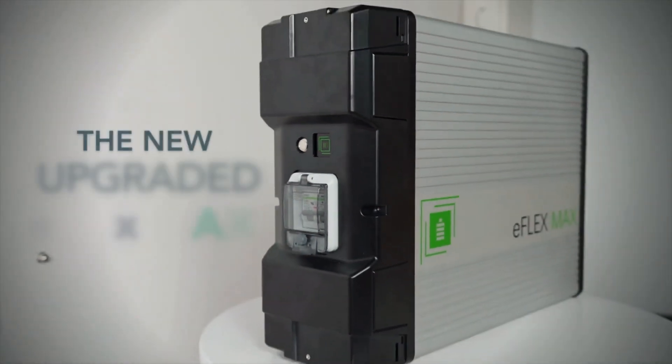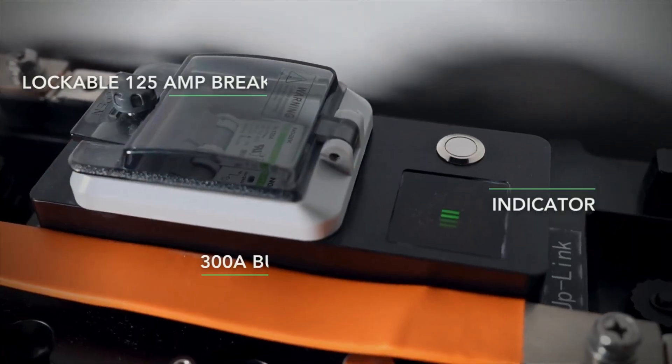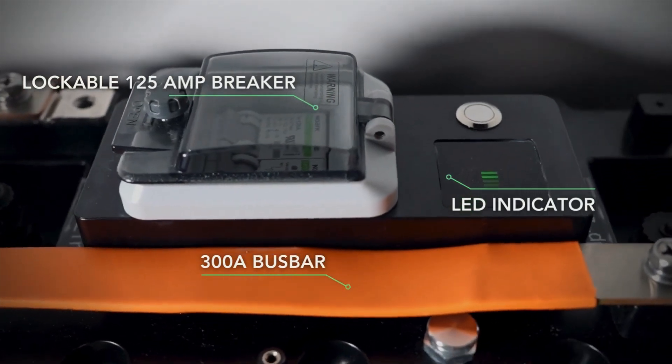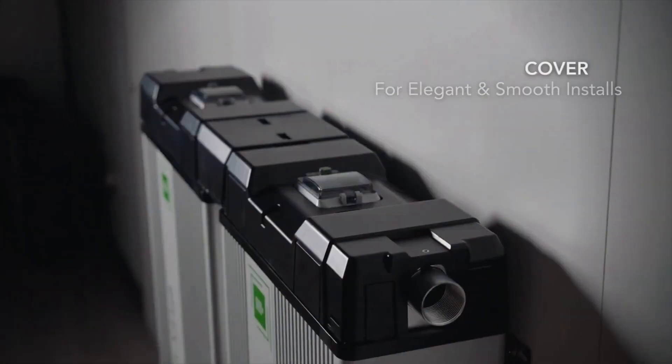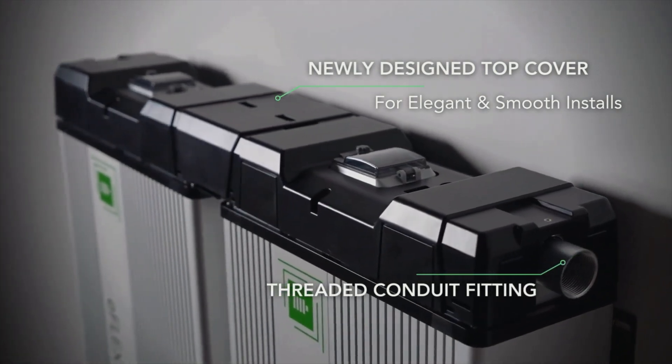It's ideal for homes, off-grid cabins, RVs, and even boats. And with 8,000 cycles and a 10-year warranty, you're getting a battery that's designed to go the distance, giving you three times the life of typical batteries on the market.